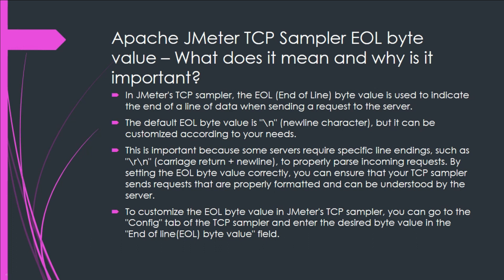This is important because some servers require specific line endings — such as backslash r (carriage return) plus newline — to properly parse incoming requests. By setting the EOL byte value correctly, you can ensure that your TCP sampler sends properly formatted requests that can be understood by the server. To customize the EOL byte value, go to the config tab of the TCP sampler and enter the desired byte value in the End of Line (EOL) byte value field.